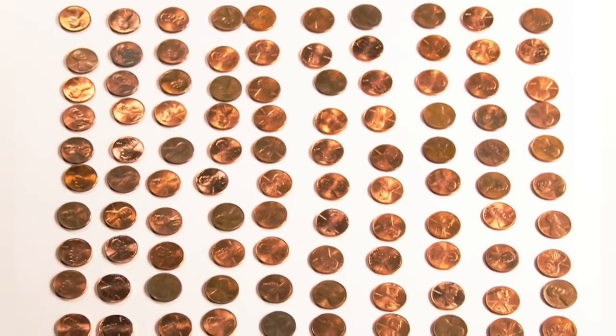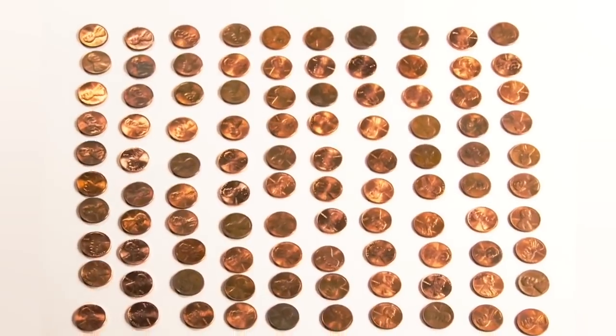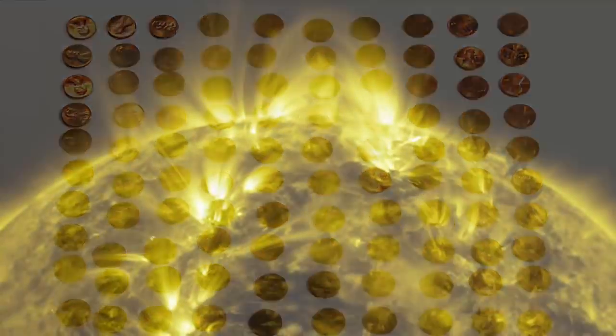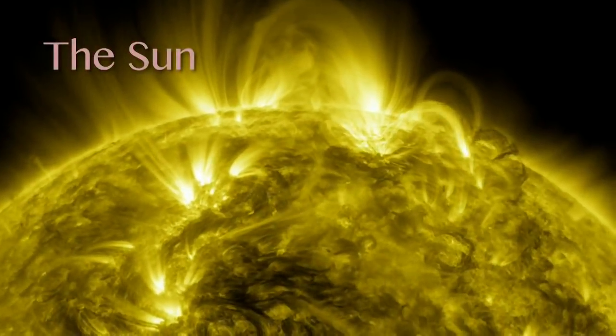Imagine that these 100 pennies represent the total energy input from the Sun to Earth. That energy fluctuates over time.